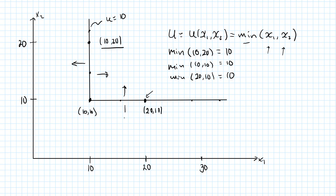Here we also have a utility which is less than 10, as is the case if we move down to the left. This indifference curve right here, for example, is the level curve for exactly the same utility function but for a utility level of 5.